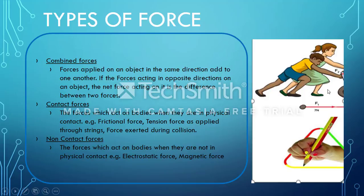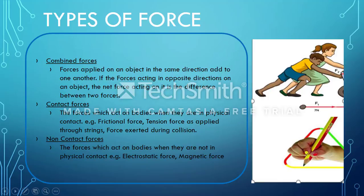If you can see the picture, a girl is pushing a wheel and a boy is also pushing in the same direction. If the direction of force is the same, the forces exerted by the girl and the boy are combined. Suppose the girl exerts 30 Newtons and the boy exerts 40 Newtons — the total is 70 Newtons in that direction. If they act in opposite directions, the resultant force will always be the difference.